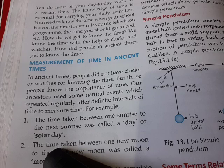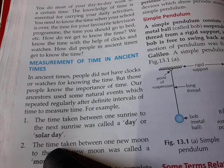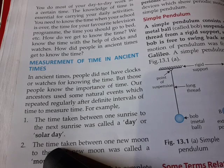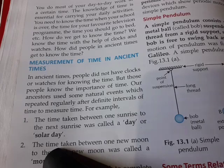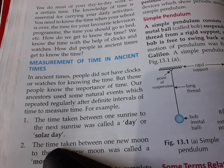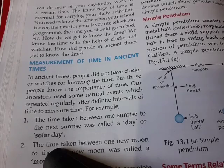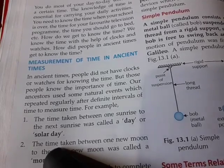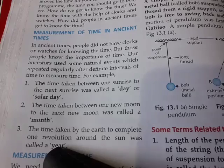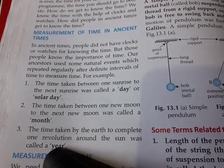Our ancestors used some natural events which repeatedly occurred at regular intervals of time, to measure time. For example, our ancestors used natural events as a daily reference. They used to spend and measure time based on natural phenomena — for example, one sunrise to next sunrise.